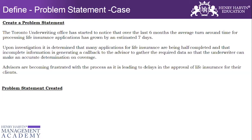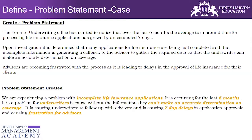Here is how the problem statement has been created: 'We are experiencing a problem with incomplete life insurance applications. It is occurring for the last six months. It is a problem for underwriters because without the information, they can't make an accurate determination on coverage. It is causing underwriters to follow up with advisors, causing seven-day delays in application approvals and causing frustration.' This problem statement has a clear 4W1H presence and calls out the impact of the problem. We should always look for problem statements that have the presence of 4W1H.